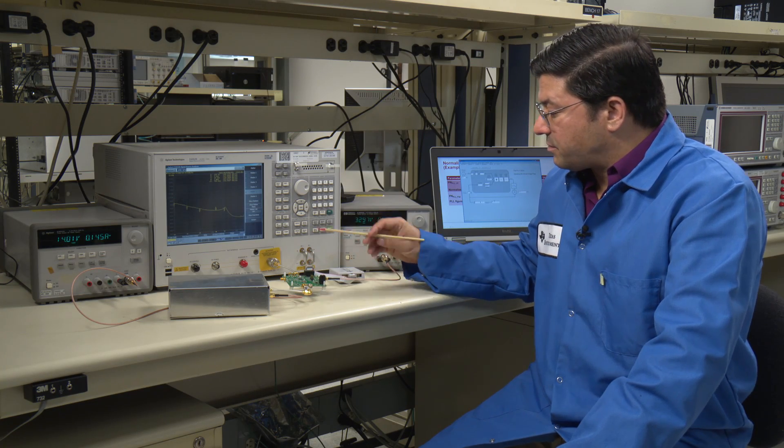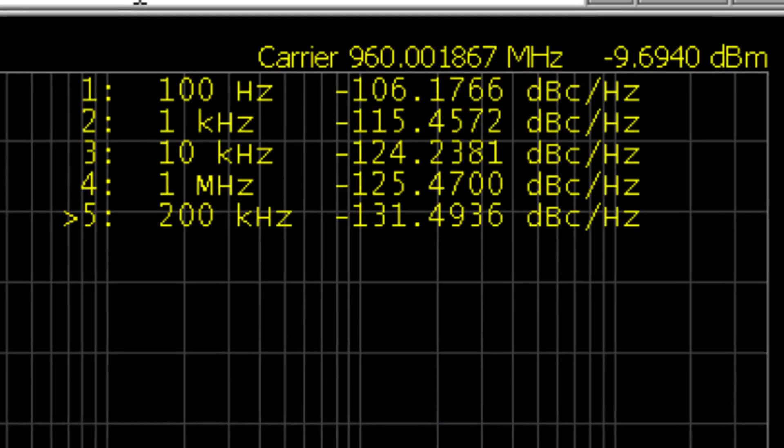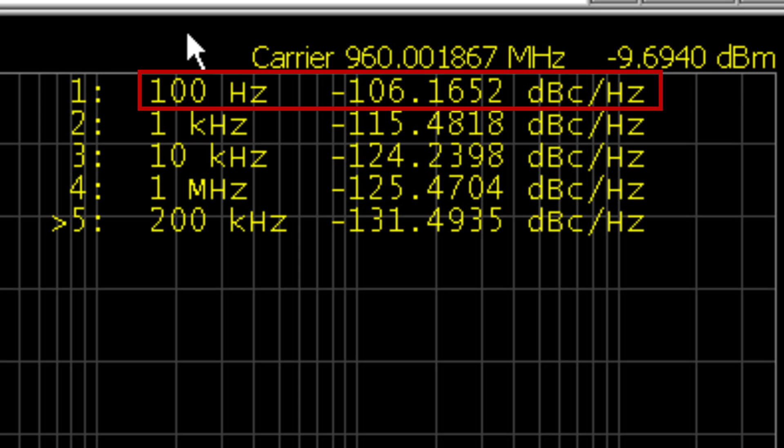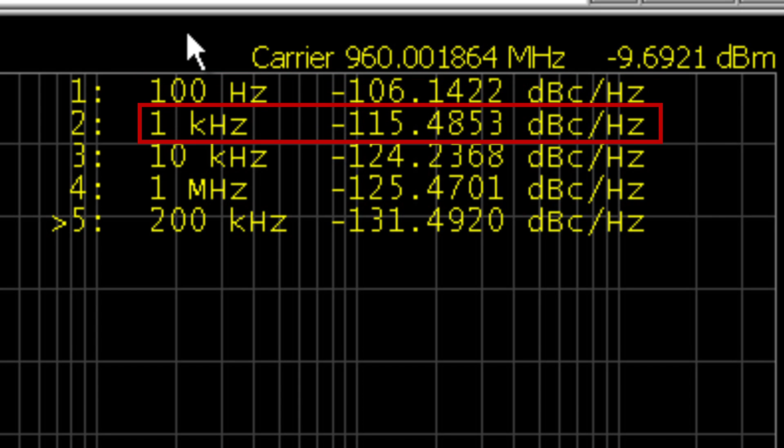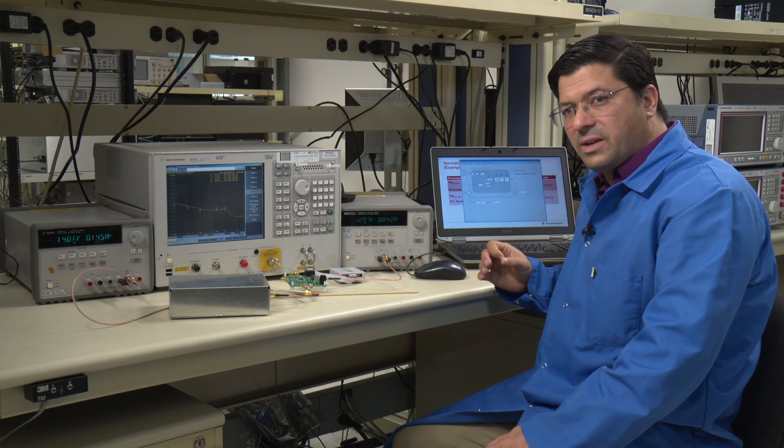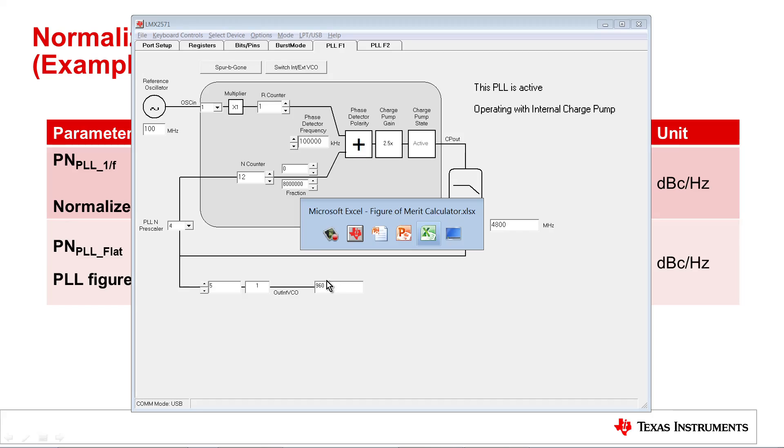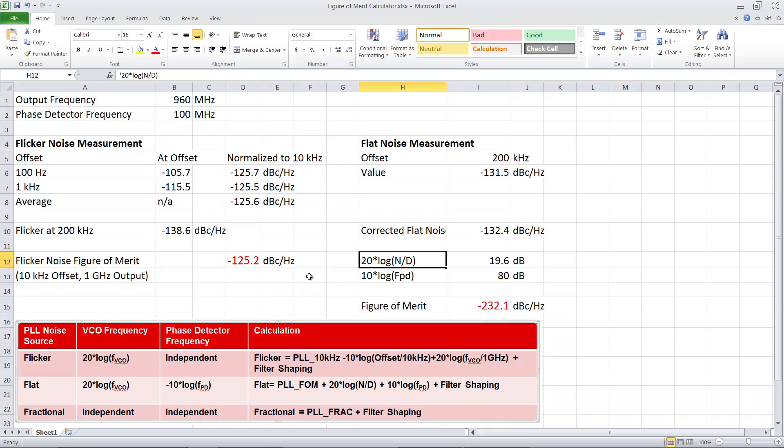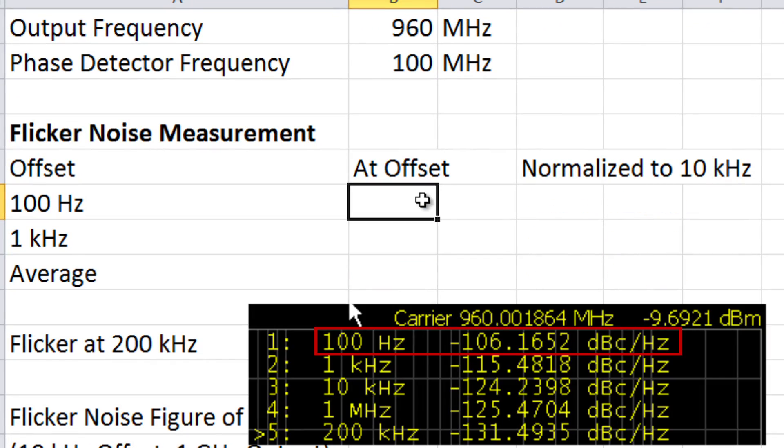So first of all, let's look at the flicker noise. If we look at our phase noise analyzer, we see we have noise at 100 Hz of minus 106.2 and at 1 kHz, 115.5. So let's go and take these numbers and calculate what this means as a normalized flicker noise. So I have a little Excel worksheet here, and I'm going to delete these numbers and type in what we have. So 100 Hz right now minus 106.1 is what I see in the scope right now.